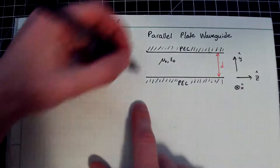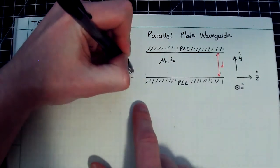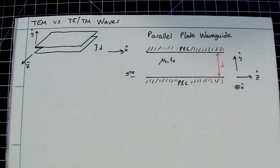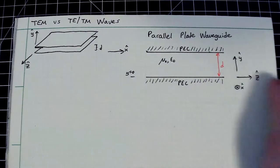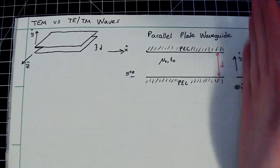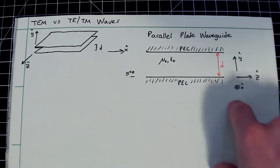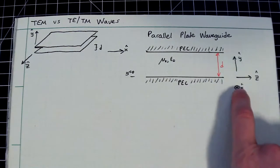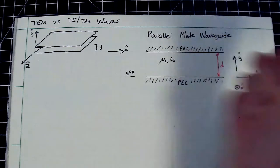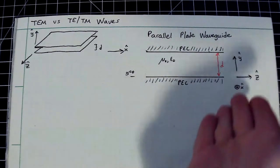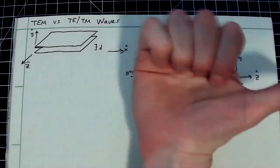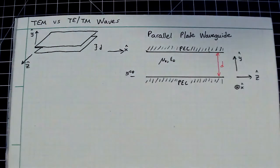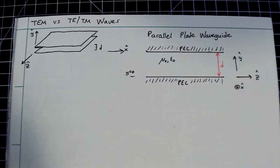Typically, Y equals zero at the bottom plate and Y equals D at the top. The positive Z direction is the propagation direction, and the X direction points into the page. Using the right-hand rule — fingers point into X, curl along Y, thumb points along Z — giving a right-handed coordinate system.